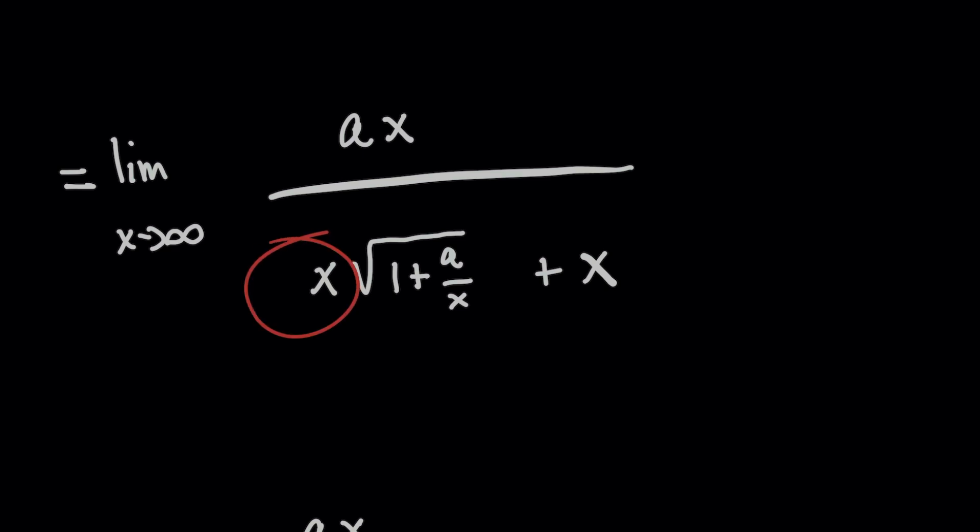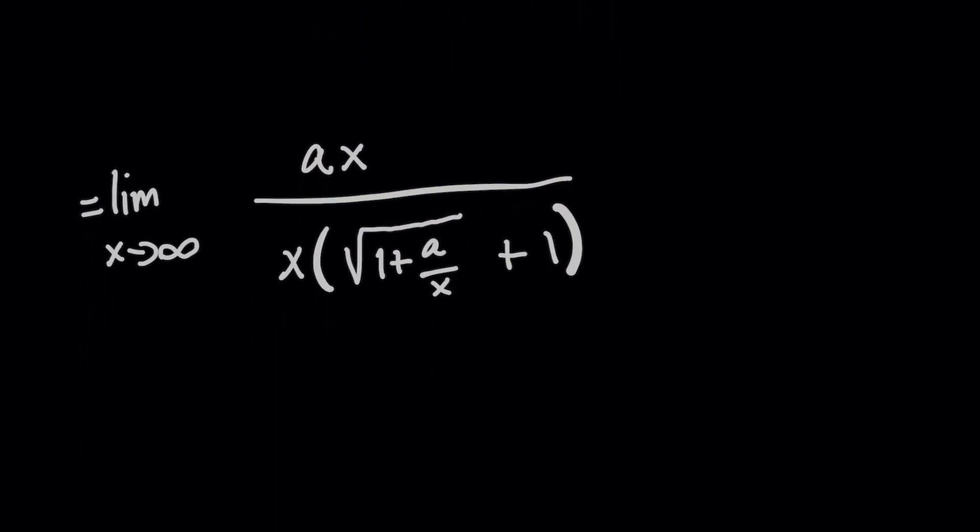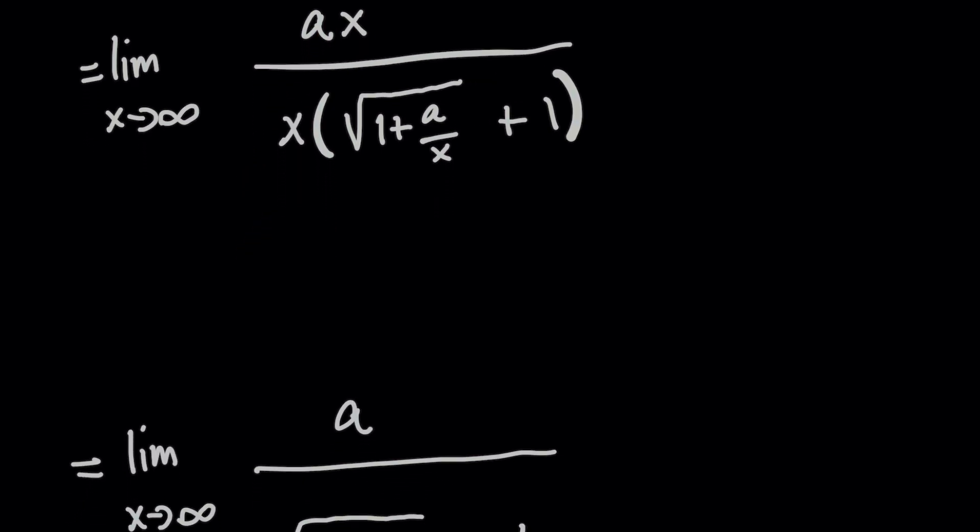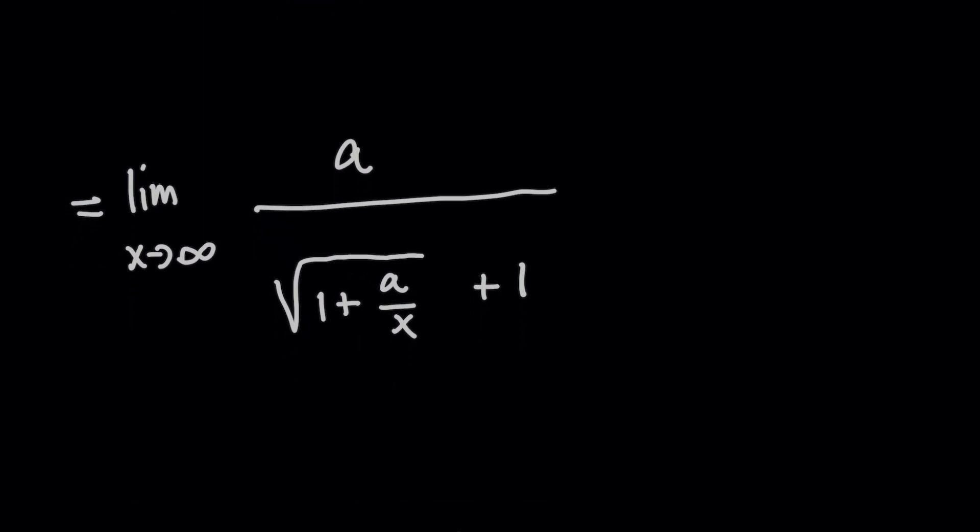And with this new expression, we can simplify this further by canceling out the x terms. So with this new limit expression now, do we need to manipulate it further? Or can we now actually solve this limit more clearly?